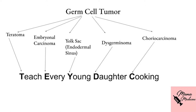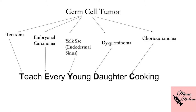Moving on to germ cell tumors. I've classified them into subclassifications: teratomas, embryonal carcinoma, yolk sac tumors, dysgerminoma, and choriocarcinoma. I often forget these, so I created a mnemonic: 'Teach Every Young Daughter Cooking.' T for teratoma, E for embryonal carcinoma, Y for yolk sac, D for dysgerminoma, and C for choriocarcinoma. The lamer the mnemonic, the better it sticks — that's Newton's fourth law.